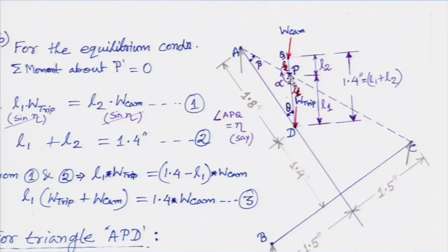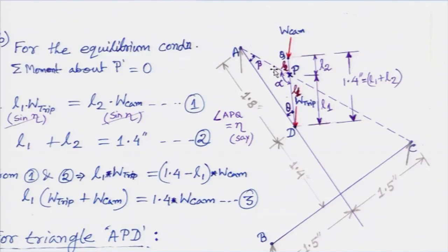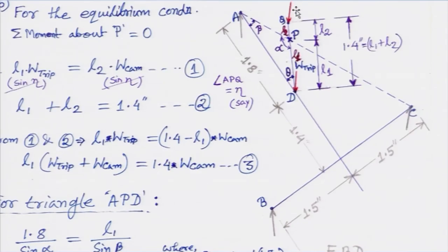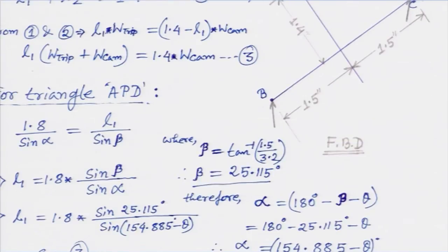The extreme condition is that the resultant of the two weights must pass through line AC. In other words, take the moment of all forces about line AC with BY = 0. This is now a completely geometrical problem: when the resultant R passes through line AC, we can take the moment of the tripod and camera weight about AC.